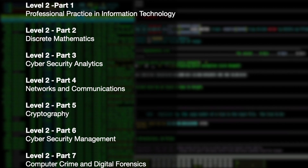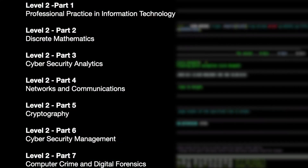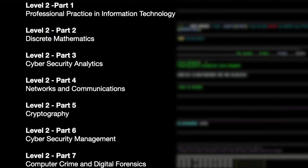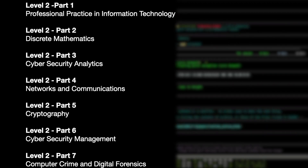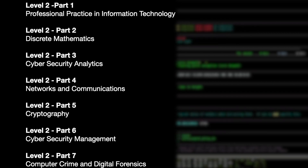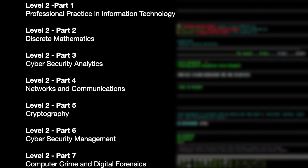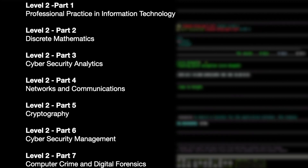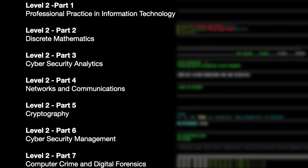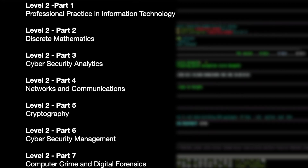Level two is a seven part series and it covers: professional practice in information technology, discrete mathematics, cyber security analytics, networks and communications, cryptography, cyber security management, and computer crime and digital forensics.